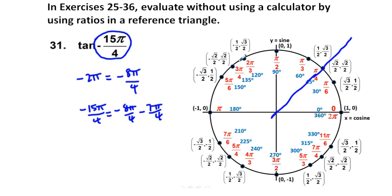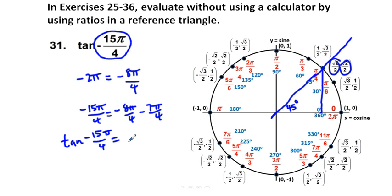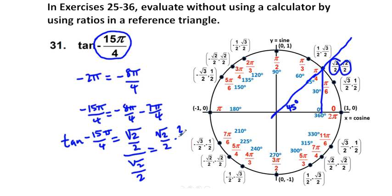So the tangent of this reference triangle, which is at 45 degrees, is sine over cosine. Tangent of negative 15π/4 equals sine (√2/2) divided by cosine (√2/2). These cancel out, and dividing √2/2 by √2/2 is the same as multiplying by 2/√2. We have cancellations all around, so our answer to problem 31 is 1.